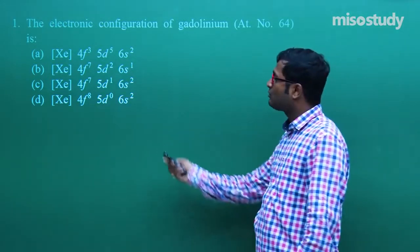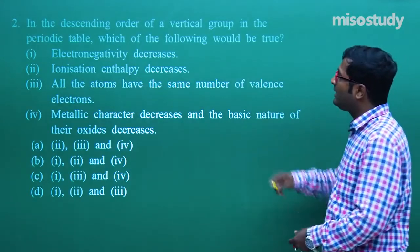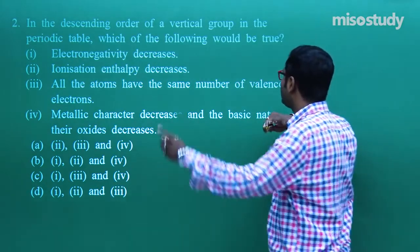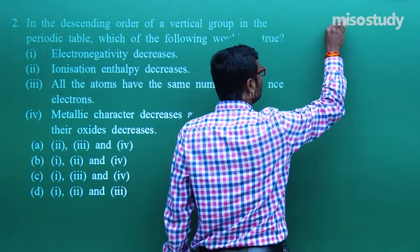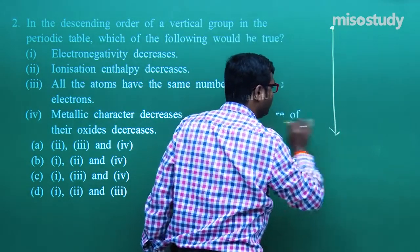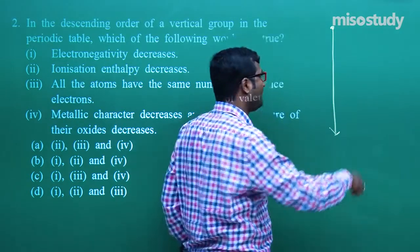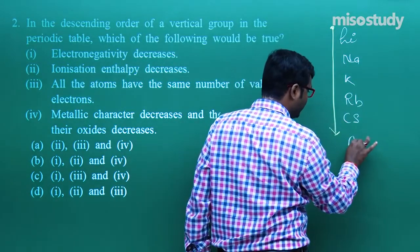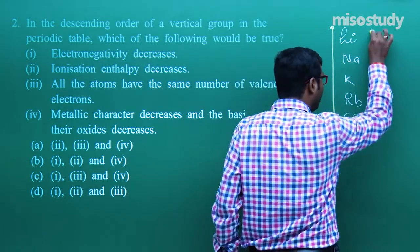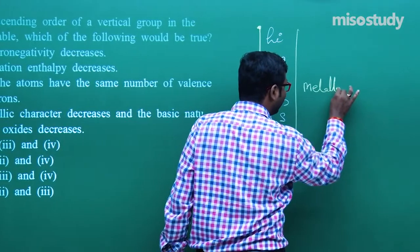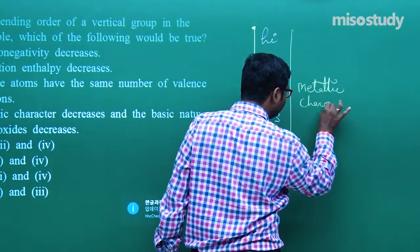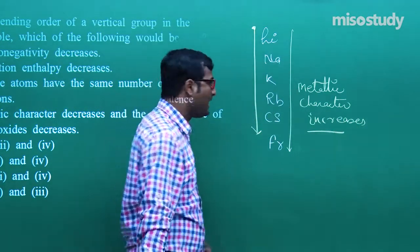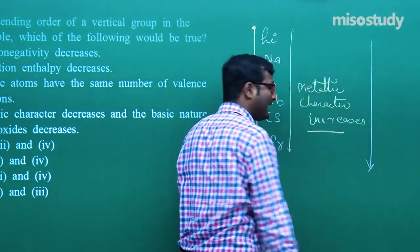Now let's move to question number two. In the descending order of a vertical group in the periodic table, which of the following would be true? Descending order means moving from top to bottom. Taking alkali metals as an example — lithium, sodium, potassium, rubidium, cesium, francium — as we move down the group, metallic character increases.